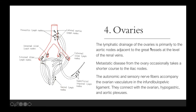The lymphatic drainage of the ovaries is primarily into the aortic nodes adjacent to the great vessels at the level of the renal veins. Metastatic disease from the ovary occasionally takes a shorter course to the iliac nodes. The autonomic and sensory nerve fibers accompany the ovarian vasculature in the infundibulopelvic ligament and connect with the ovarian, hypogastric, and aortic plexuses.